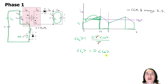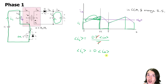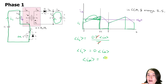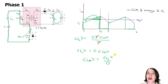Since we're interested in the average value of the magnetizing inductance current, we rearrange: I_m(avg) equals the average input current divided by the duty ratio D.